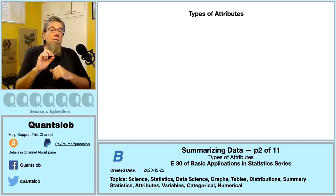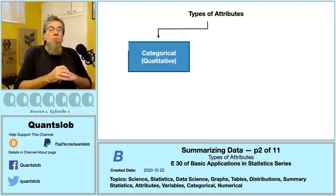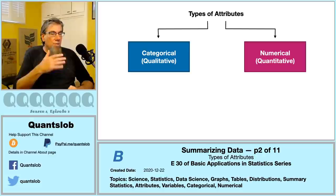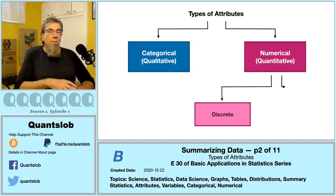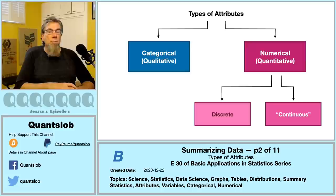The process we apply to our data to produce our summaries is going to depend on the types of attributes we are studying, so we need to be able to distinguish attribute types. This representation may be a slight oversimplification, but it is very useful. We can broadly classify any attribute or variable as being either categorical or numerical.